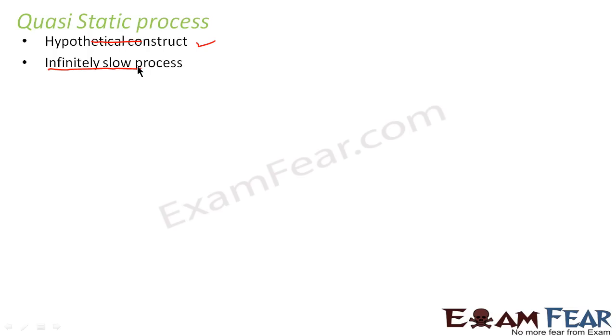So basically what happens in a quasi-static process is whenever a system departs infinitesimally from its original state such that the way it is moving from its original position is not at all visible. Then we call that process as a quasi-static process.